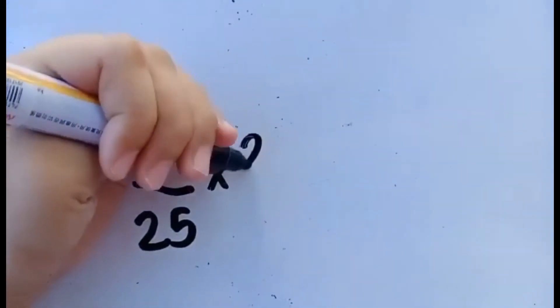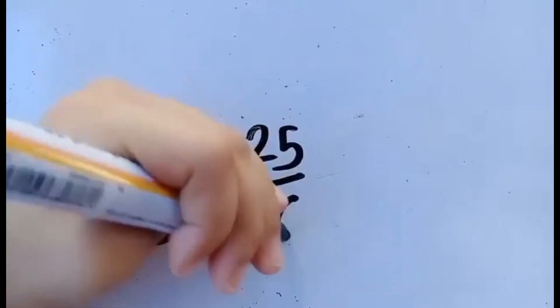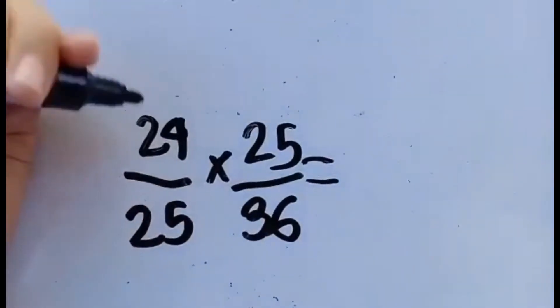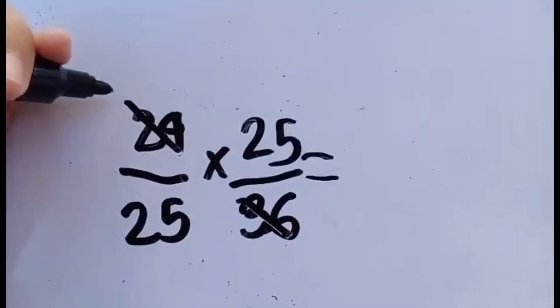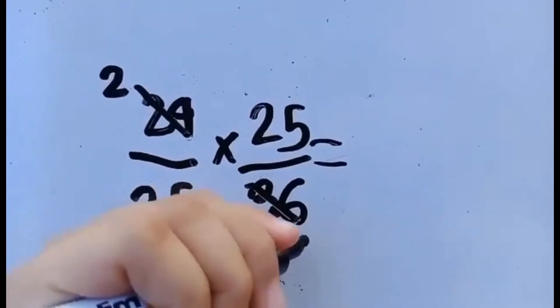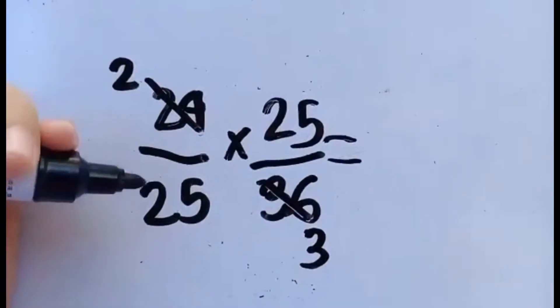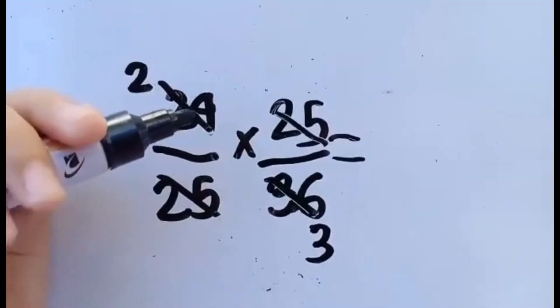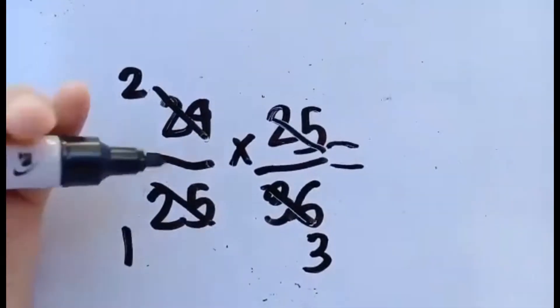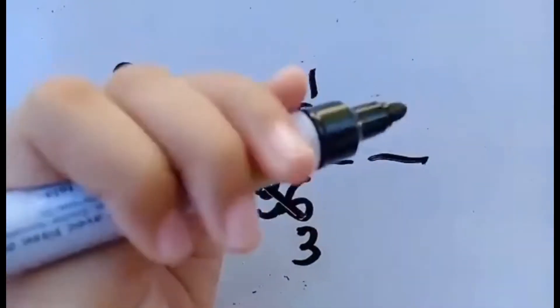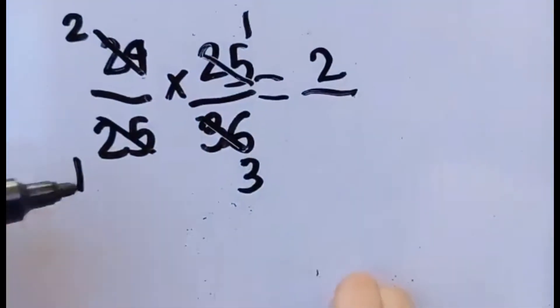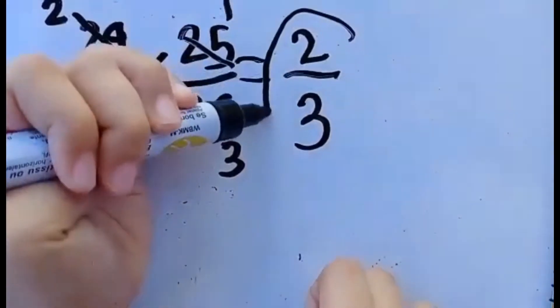Let us multiply 24 over 25 times 25 over 36. Since we have big numbers, we can simplify them through cross-cancellation using the GCF. The GCF of 24 and 36 is 12. So 24 divided by 12 is 2, and 36 divided by 12 is 3. Then 25 and 25 will cancel to 1 and 1. Numerator times numerator and denominator times denominator gives us a final answer of 2 thirds.